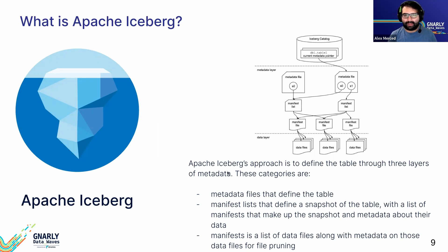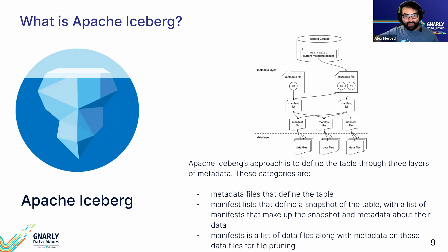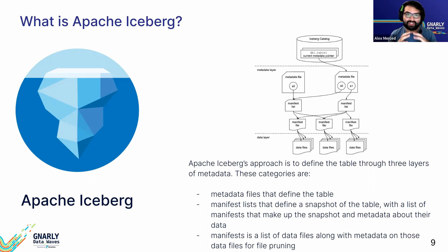Essentially, in Apache Iceberg, where files are physically located doesn't matter — as long as they're listed in the manifest files. The files could be anywhere. The beauty of that is you can more creatively allocate your files, which helps deal with throttling from object storage providers that penalize you for bundling too many files in the same location.